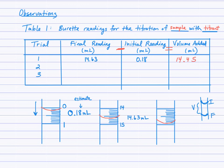We weren't very careful about that first trial — we just let the solution pour in until we saw the colour change, so we know that's too much. We're not going to use that one for our calculations. But at least now we have an idea that it's around 14 milliliters, not 44 or just 4.